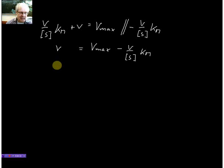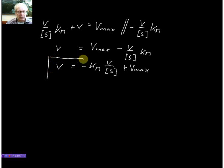Minus V over the substrate concentration, so that's this part here, plus Vmax, and that actually is our linear transformation of the Michaelis-Menten equation.